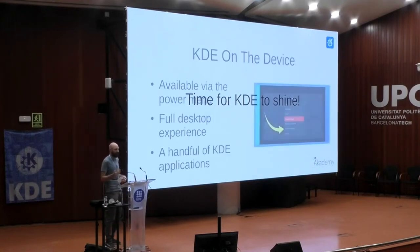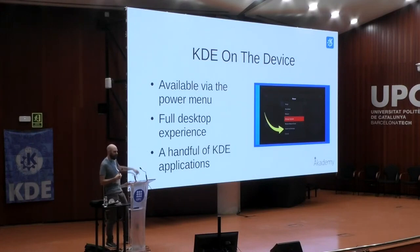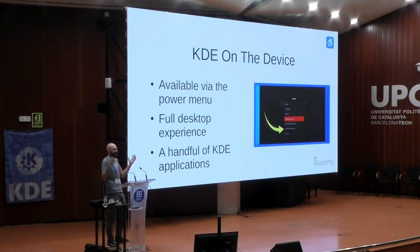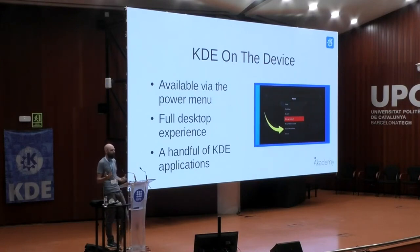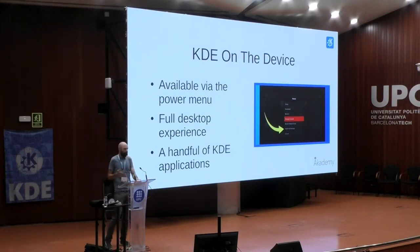So how does KDE on your device work? Hidden away in the power menu, press a button called 'switch to desktop,' as highlighted by the yellow arrow instead of the red label, and you get a full desktop experience. If you want to know what Plasma looks like on a Steam Deck, just open your own laptop — because it's the same, but slightly smaller. Out of the box, you're shipping Plasma and also a handful of KDE applications: Dolphin, Ark, Gwenview — but not that many.